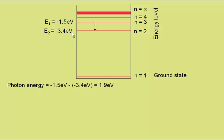Which is minus 1.5 electron volts minus minus 3.4 electron volts, which gives the photon an energy of 1.9 electron volts.